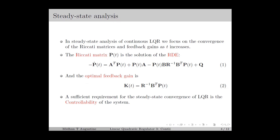From the previous lecture, we obtained the expression for the Riccati matrix P as the solution of the Riccati differential equation as given in equation number 1, and the optimal feedback gain as in equation number 2. Both the Riccati matrix and feedback gain are functions of the time t. Therefore, we are interested in whether these matrices converge to some fixed matrices as t increases.